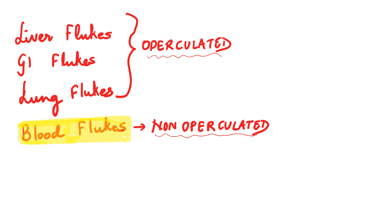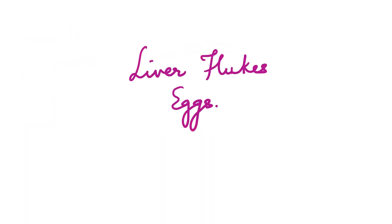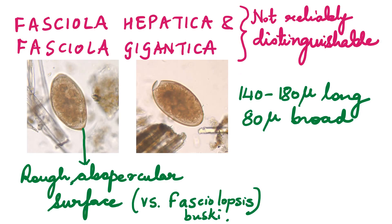Let's start with the liver flukes. Liver flukes belong to the following genera and species: Fasciola hepatica, Fasciola gigantica, Clonorchis sinensis, Opisthorchis viverreni and Opisthorchis felineus. Amongst them, Fasciola species — Fasciola hepatica and Fasciola gigantica — the eggs passed out in the stool cannot be reliably distinguished from each other. They almost look the same.